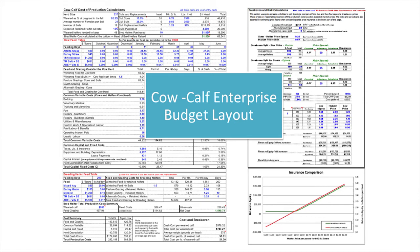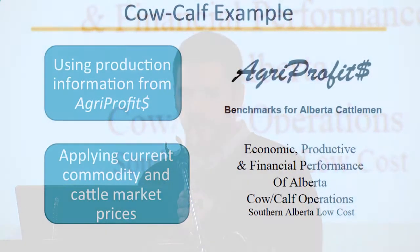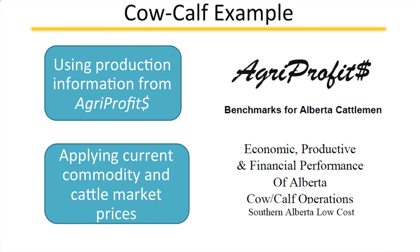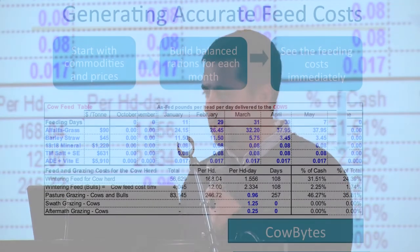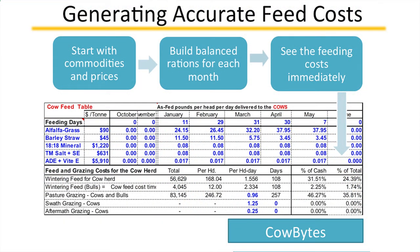When you look at this, it's one page in an Excel spreadsheet, and as you start going through it the blue numbers are what you play around with and it calculates everything through. At the bottom you have a chart to analyze whether you want to take cattle price insurance or not. For the example, Bruce has used the Agri-Profits data, so we have actual numbers in here. You start with commodity prices, build rations for each month, and you'll see the feeding costs total up immediately. It's in dollars per ton, and you can add in whatever you're feeding and work it through. You can also use the Cowbytes program to help with rationing forecasts.